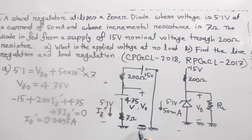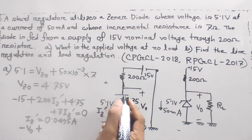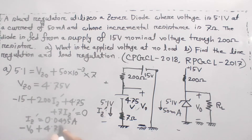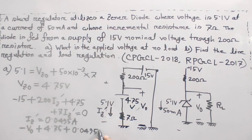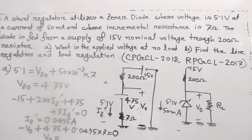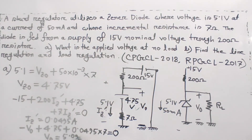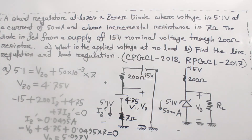So Vout equals Vz0 plus iz-prime into 7 equals 4.75 plus 0.0495 into 7, which gives approximately 5.097 volt. The output voltage is 5.097 volt. Part one is now complete.